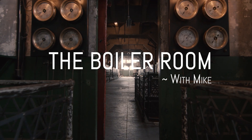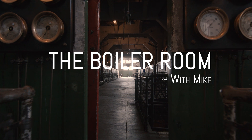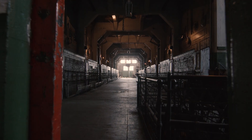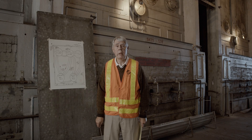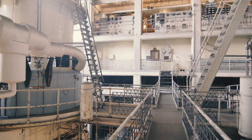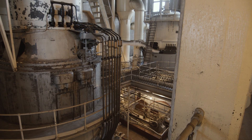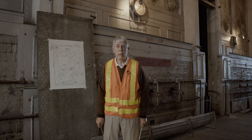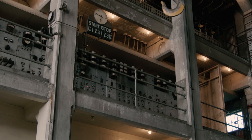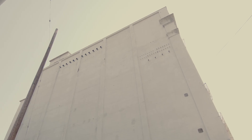Welcome to the boiler room. This is where it all starts and happens. We have incoming water going into these boilers where it's heated. Steam is produced and goes out to the engine room where it turns the turbines that turn the generators. The generators make the electricity, which flows to the distribution panels on the far side of the building and goes out to the grid from there.